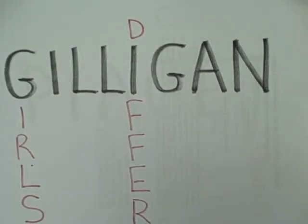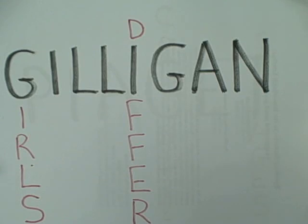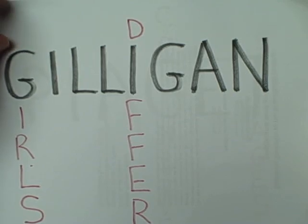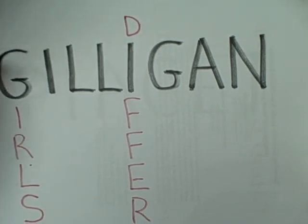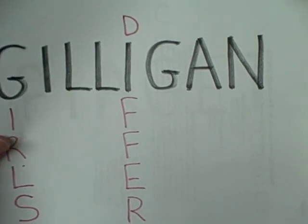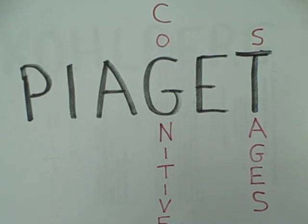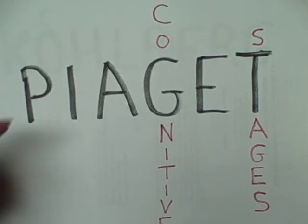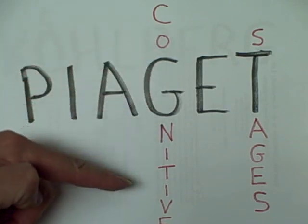Then we have Gilligan, who says the problem with Erikson is he doesn't recognize that girls differ. Erikson's model is essentially a male model. Women have a carefully, slowly broadening circle of concern rather than these distinct stages.